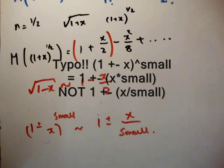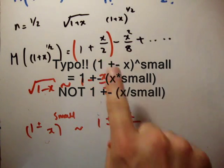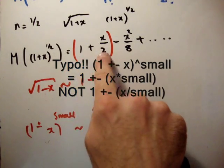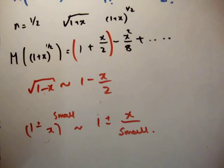Sorry, this is the McLaren expansion of the McLaren series. So, 1 plus or minus x to something small can be approximated as 1 plus or minus x over something small by taking the first two terms in our McLaren series.